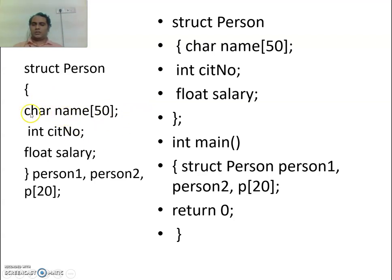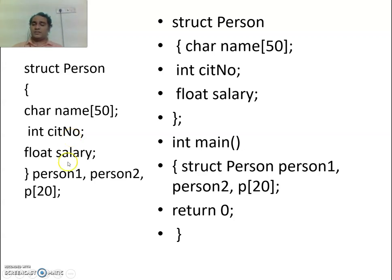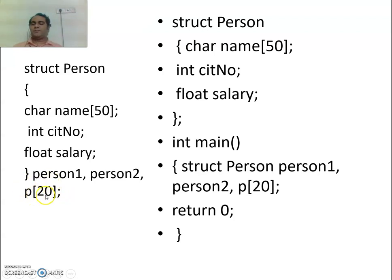For example, with struct person having char name and int ID, I can declare structure variables person1 and person2 right after the structure definition. I can also have an array within the structure. Similarly, an array of structures — for example, p[20] means 20 variables each of the structure type, requiring 56 memory locations times 20 for total allocation.